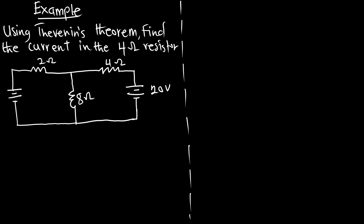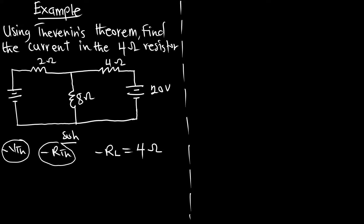Using Thevenin's theorem, find the current in the 4 ohm resistor. As I already said, there is always a load resistor given, so here we know that in Thevenin's theorem we are looking for VTH, RTH, and RL such that we combine the three in a series arrangement. From the question, our load resistance is going to be the 4 ohm resistor. Now we are to determine the RTH and also the VTH.